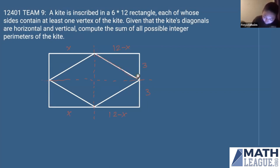and that's going to be by Pythagorean theorem, the square root of (12 minus x) squared plus three squared. And then our perimeter will be equal to two times that, plus two times the square root of x squared plus three squared. Okay, cool. So we now have our perimeter of this particular version of the kite.